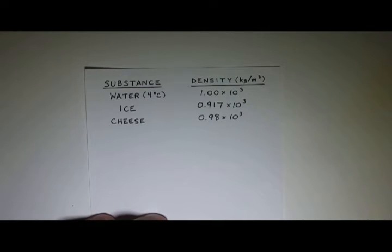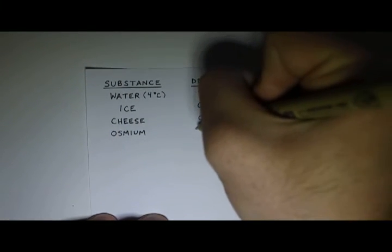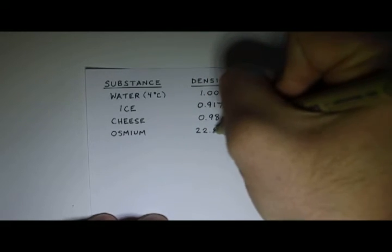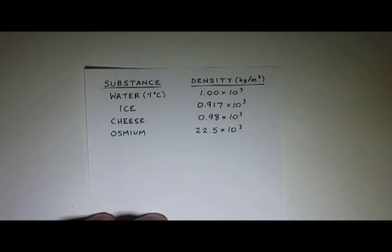How about, what's the densest substance on Earth? That's kind of an interesting thing to ask. Well, that ends up being the metal osmium. And osmium has a density of 22.5 times 10 to the 3 kilograms per cubic meter. That's quite a bit more dense than cheese.